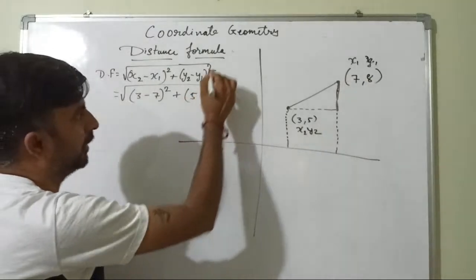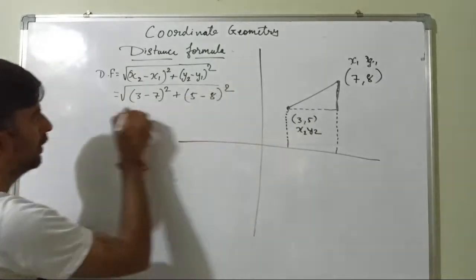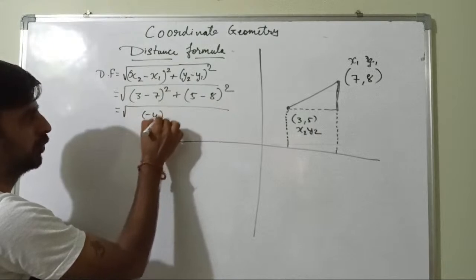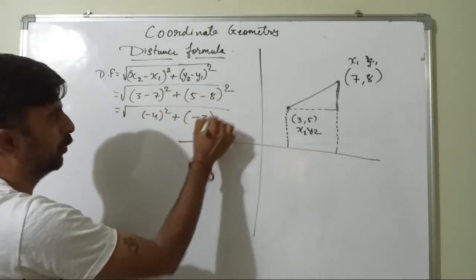5 and y1 is 8. So here you will get 7 minus 4 whole square, that is minus 4 whole square, and 5 minus 8 that is minus 3 whole square.